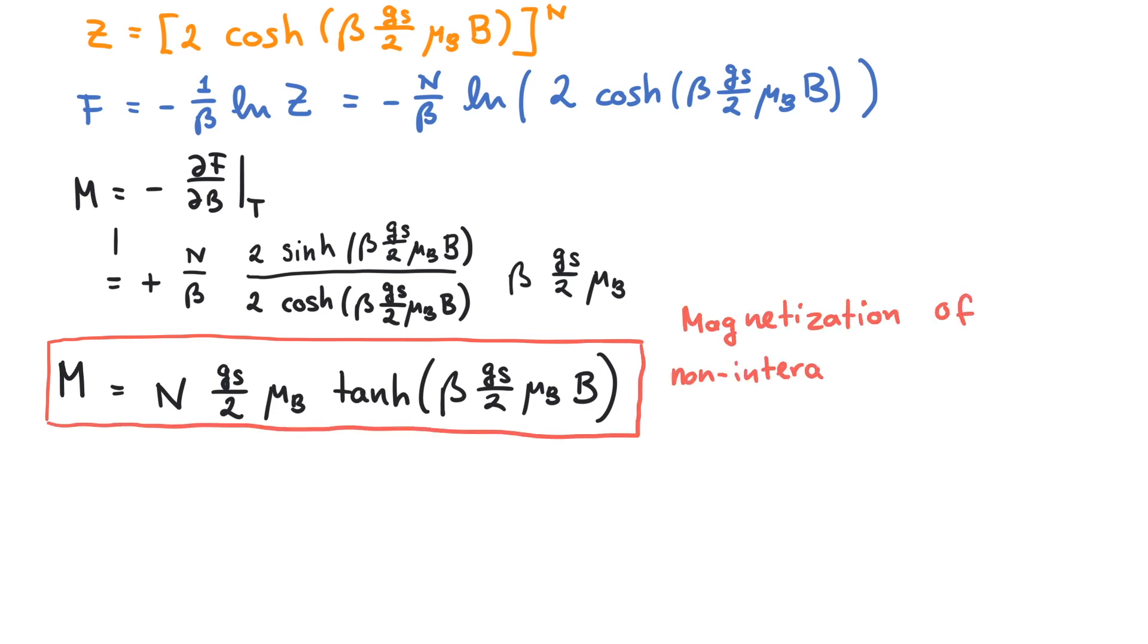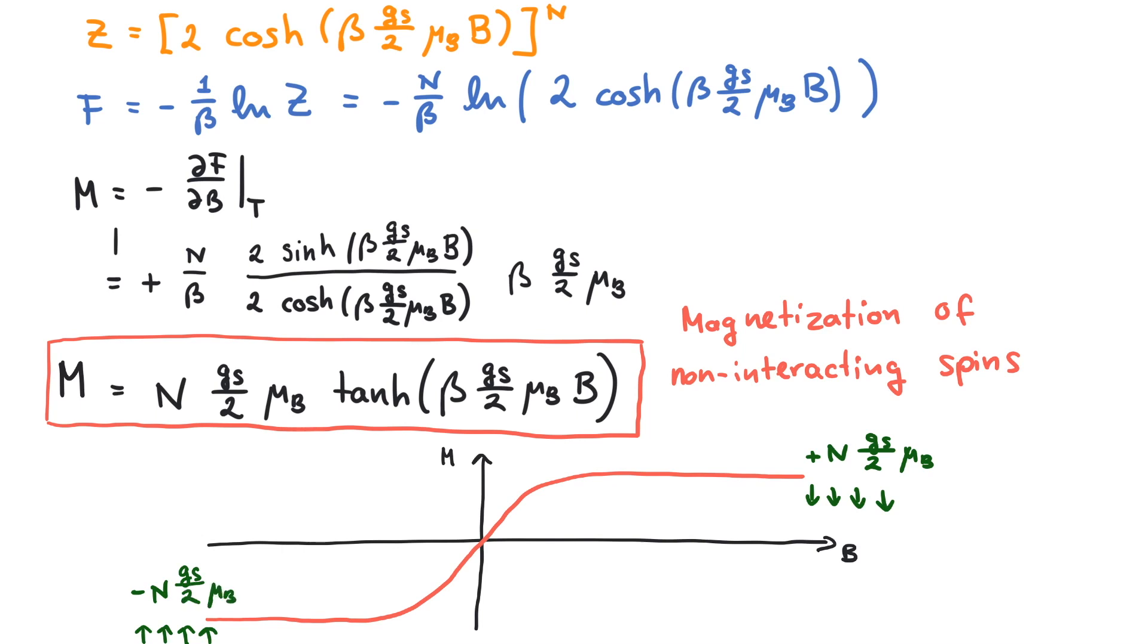We have just computed the magnetization of a non-interacting spin system as a function of an external magnetic field. When the field is large, all spins will align. The maximum magnetization is n times gs over 2 times the Bohr magneton.